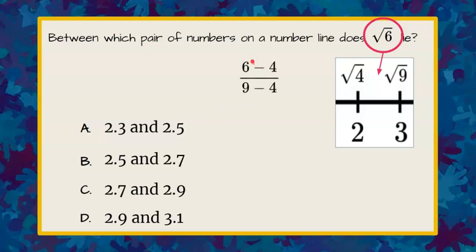We are going to make a ratio, and we take the radicand, which is the value underneath the square root symbol, which is 6, and we subtract the radicand of the smallest perfect square that it's closest to, which is the square root of 4, and our denominator represents the radicands of the two perfect squares that it lies between. Largest subtract the smallest.